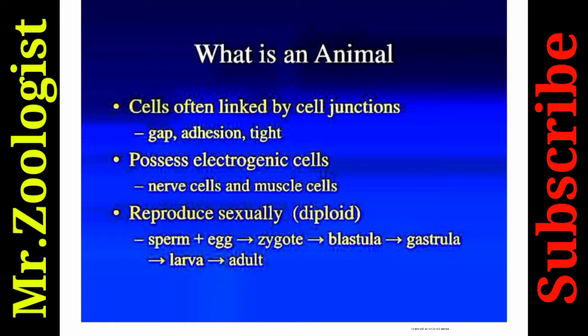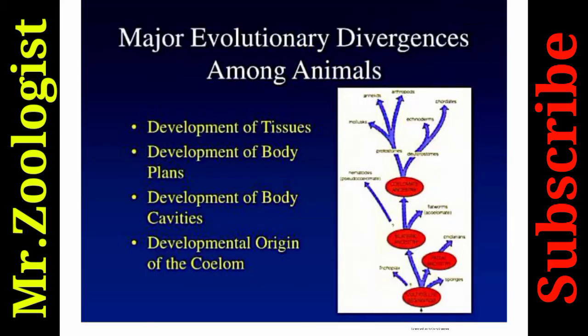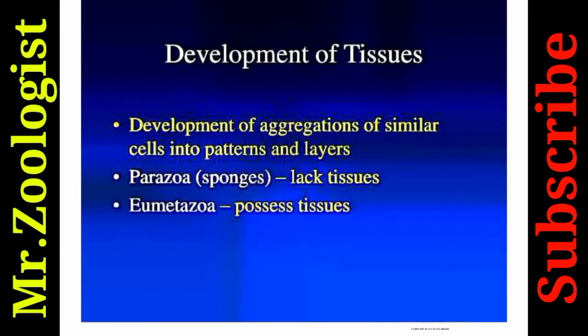The gastrula develops into a larval stage — a temporary, intermediate stage between embryo and adult. When conditions become favorable, the larva develops into an adult. The major evolutionary divergences among animals are: first, development of tissues; second, development of body plans; third, development of body cavities; and fourth, developmental origin of the coelom — a cavity that develops at the later stage.